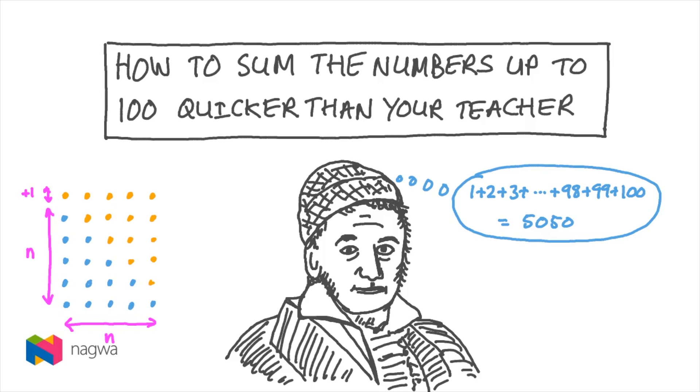We're going to look at a way to add up all the counting numbers from one to a hundred, or a thousand, or even more, really quickly. But first, we're going to find out about a brilliant German mathematician called Johann Karl Friedrich Gauss, who managed to devise this method on the spur of the moment when he was about eight years old, much to the annoyance of his teacher.